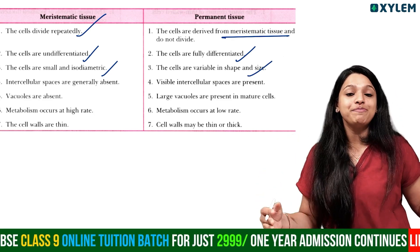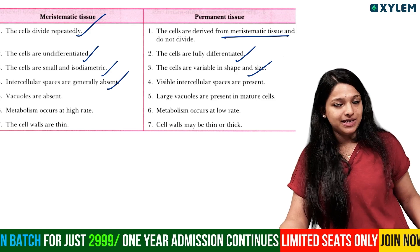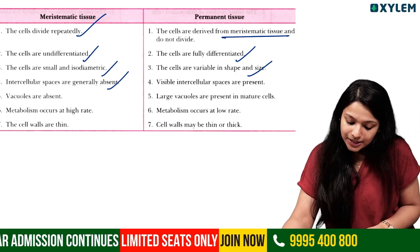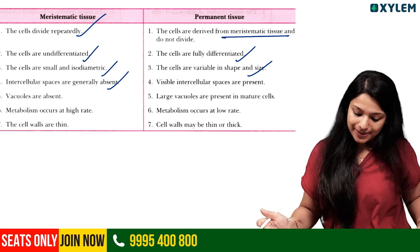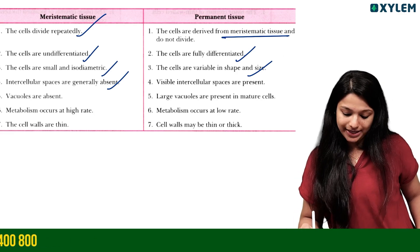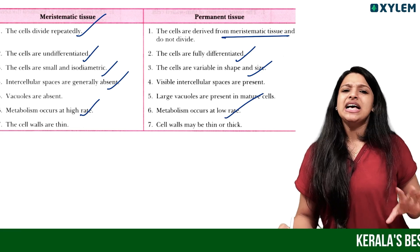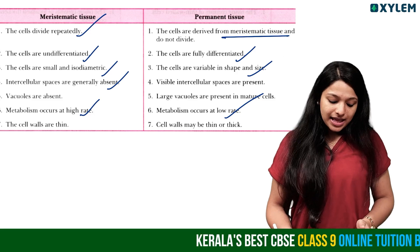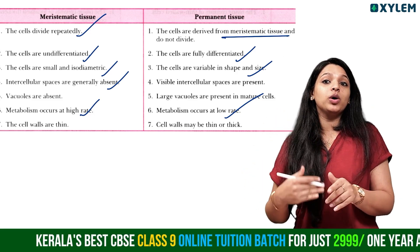Permanent tissues are variable in shape and size. Intercellular spaces are generally absent in meristematic tissue, while permanent tissues may have intercellular spaces. Vacuoles are absent in meristematic tissue; permanent tissues have vacuoles. Meristematic tissues have a high metabolic rate and thin cell walls.